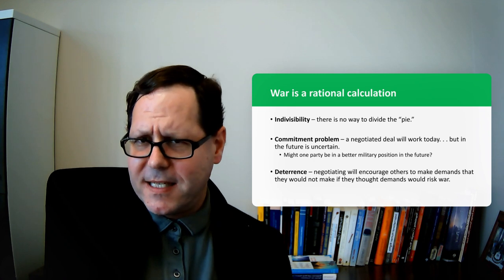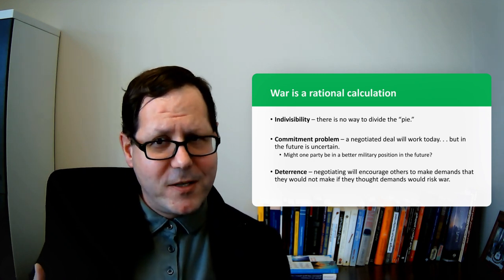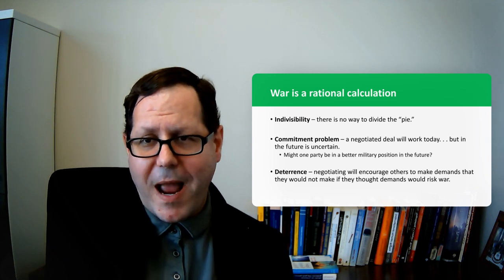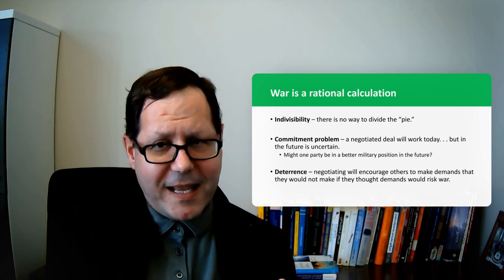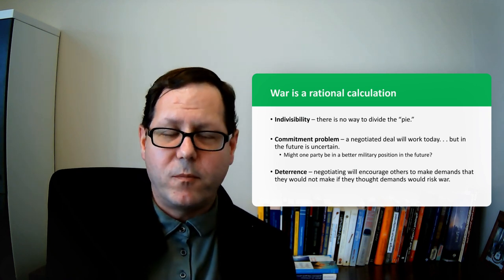The next step that Hitler takes is the Anschluss, the unification with Austria, again where he's testing to see what's going to be the reaction of Western powers. Again, they sort of say, well, yes, we said that you shouldn't be able to do that, but we're not going to press you on it.